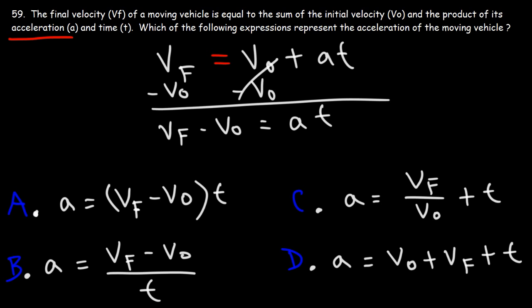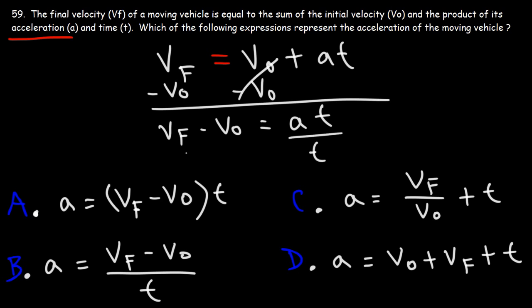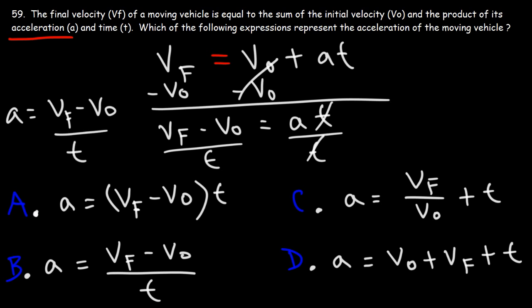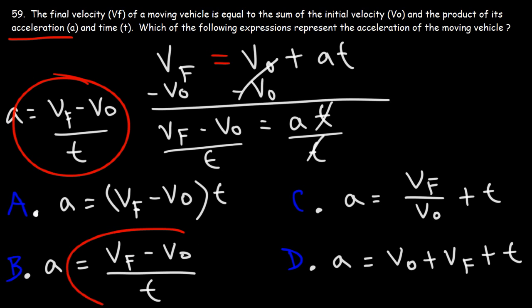Now we need to separate a from T. Since they're multiplied to each other, we need to divide — so let's divide both sides by T. The acceleration is the final velocity minus the initial velocity, which is basically the change in velocity divided by the time. This corresponds to answer choice B.